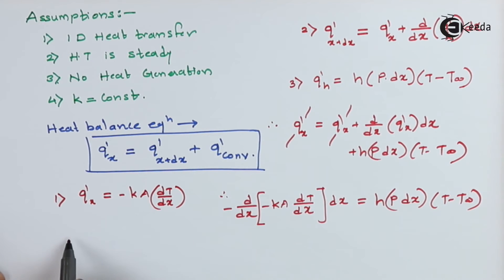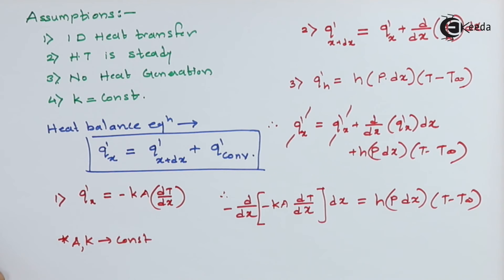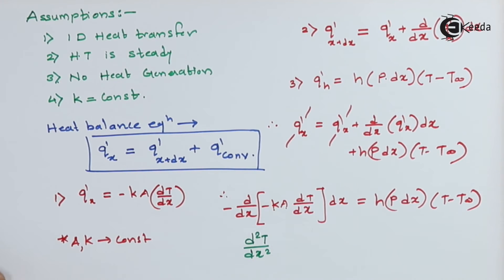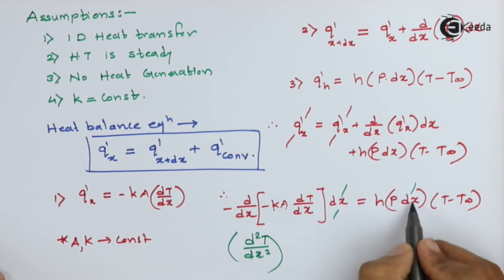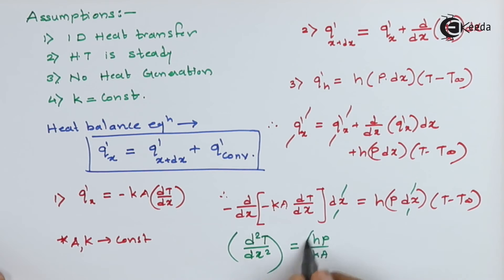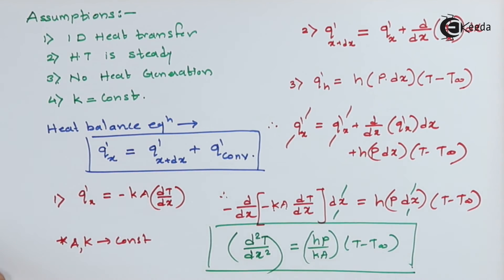Since K and A are constants, we can take them outside, leaving d²T/dx². Cancelling dx, we get d²T/dx² equals (HP/KA) times (T minus T infinity). This is an important second-order differential equation that we need to solve.